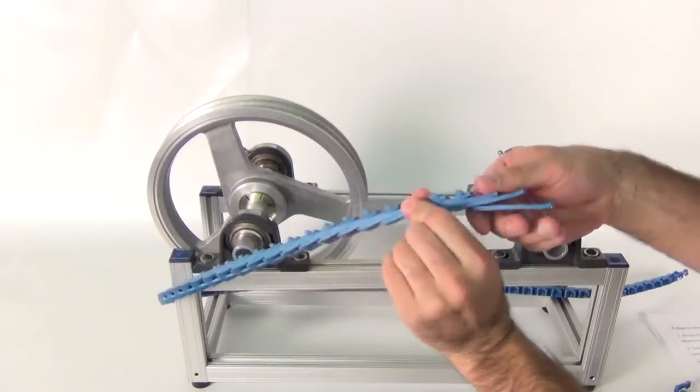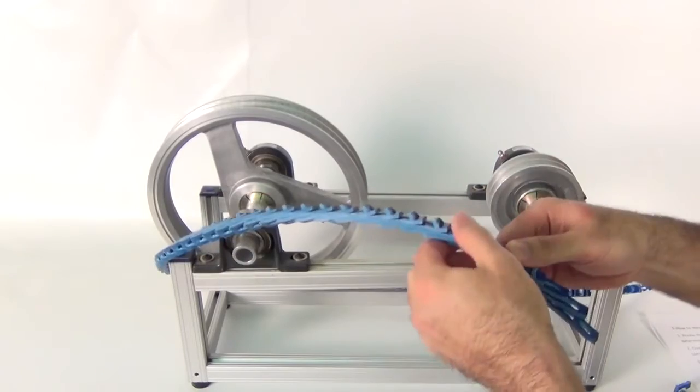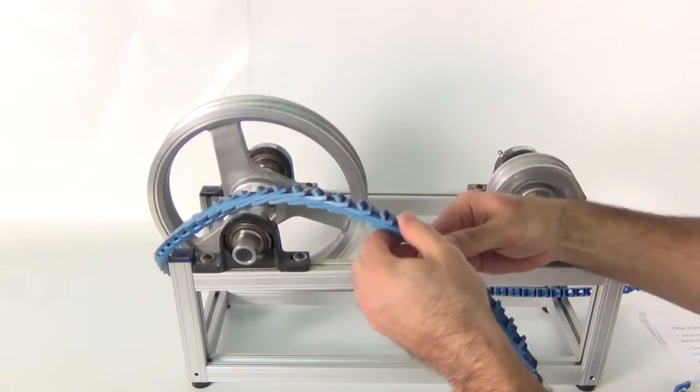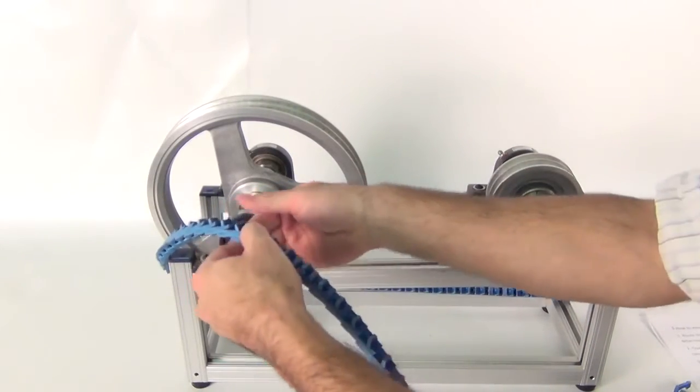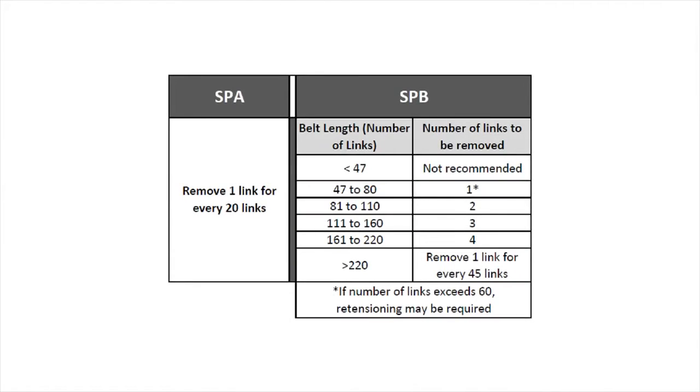For the correct installed belt length and to assure optimum belt tension when running, count the number of links that remain and use the chart to determine how many links to remove.